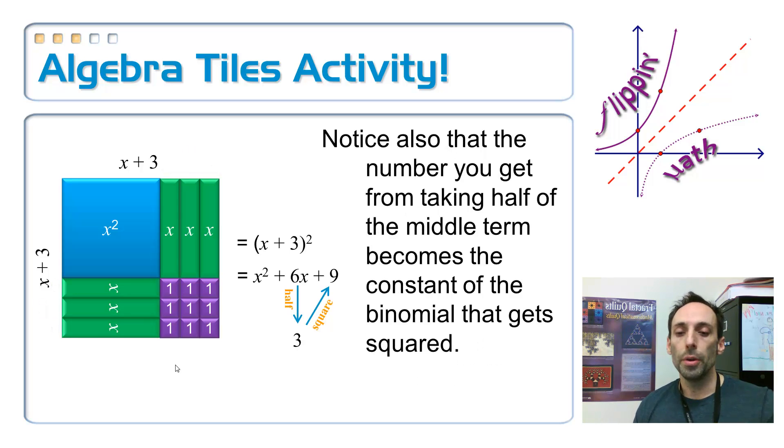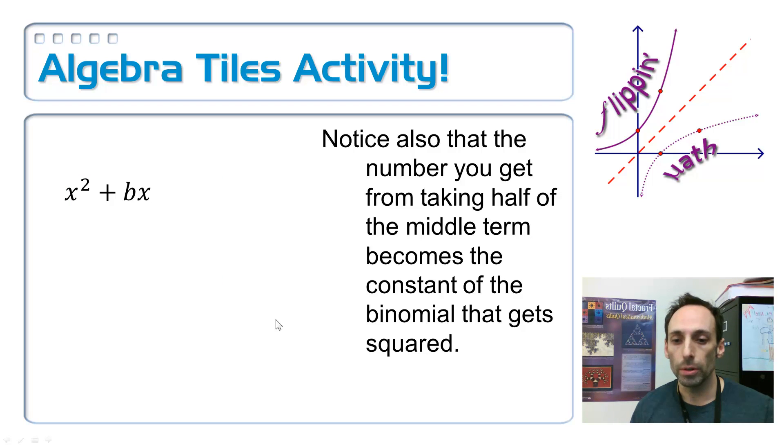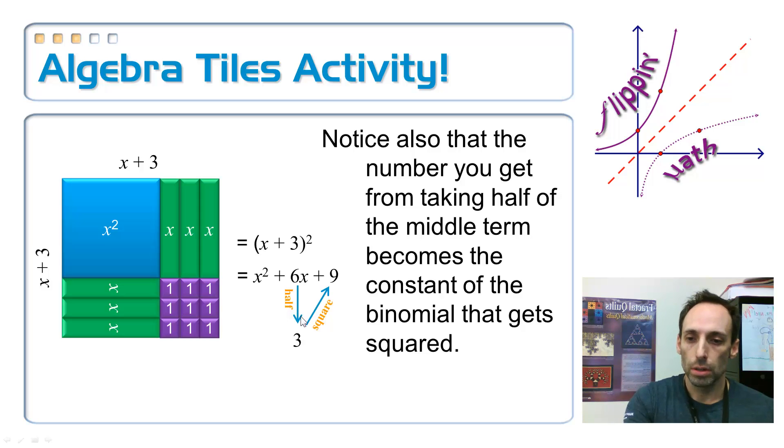So in general, that's what you're doing. You're taking half of that middle term, and then you're squaring it. Whatever number you get, that's what it takes to complete the square. Also notice this. The number that you get whenever you take half of the middle term, that is also what you get, or what you put in the parentheses whenever you square that binomial. Those numbers will always be the same.